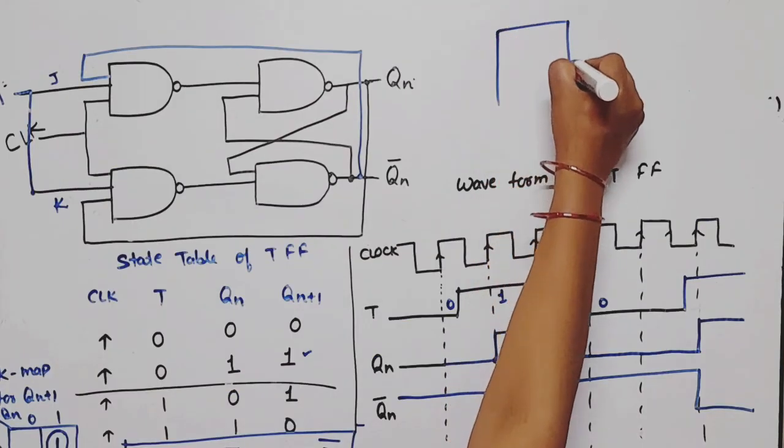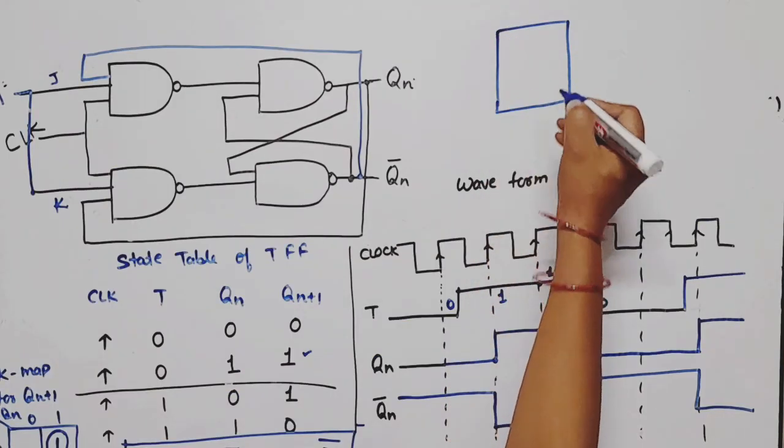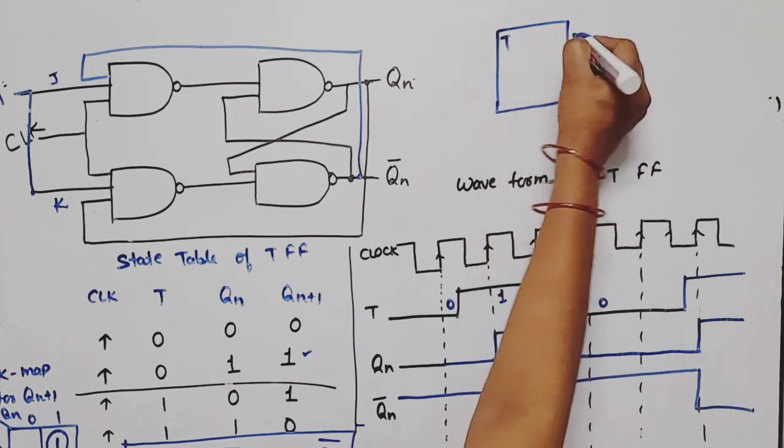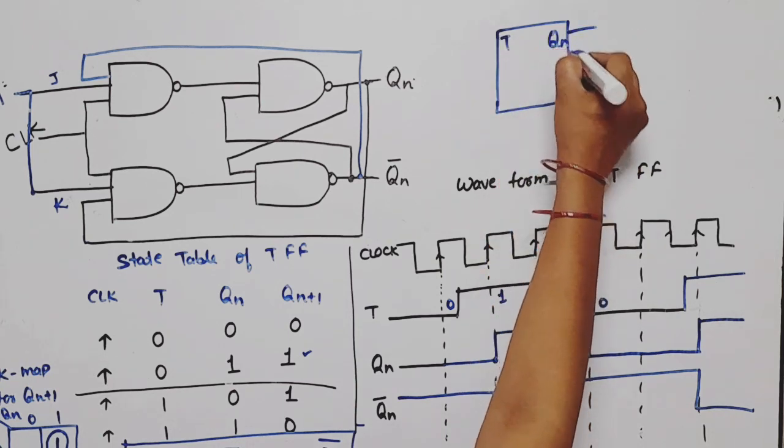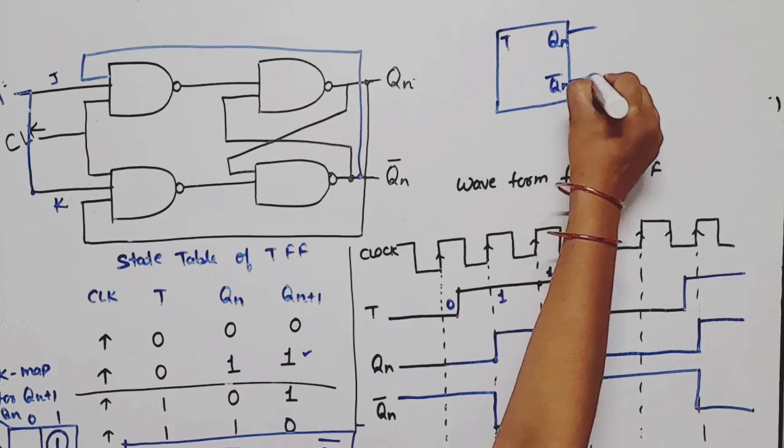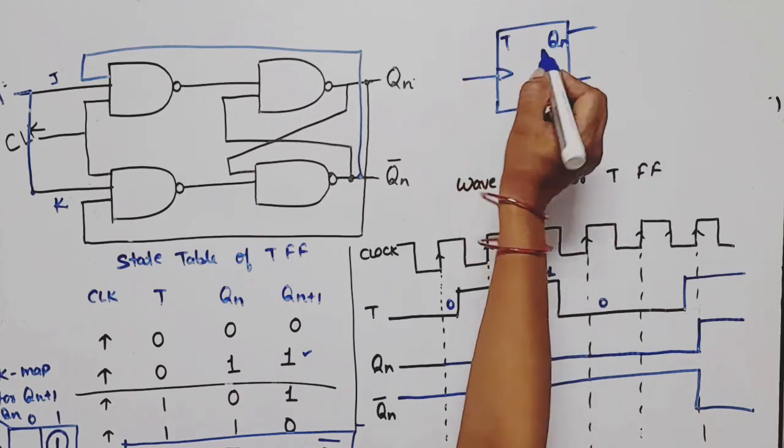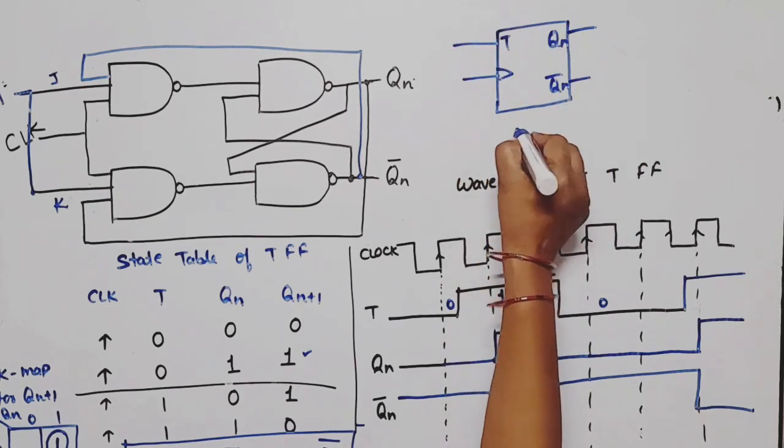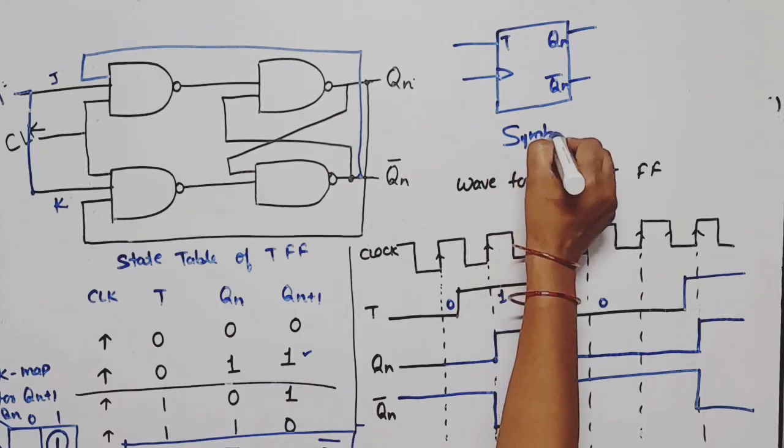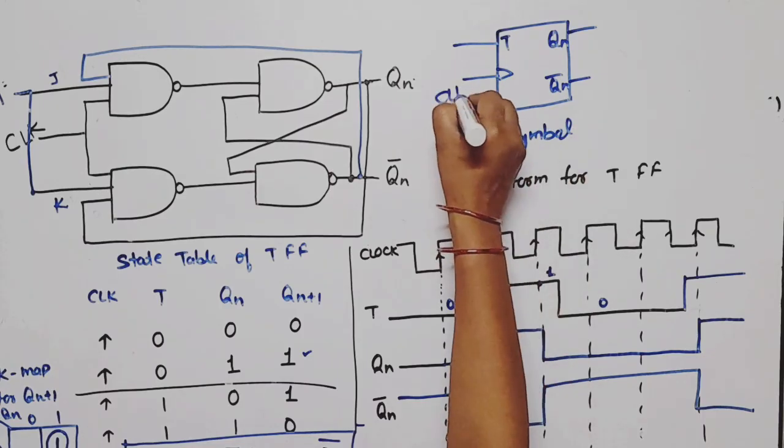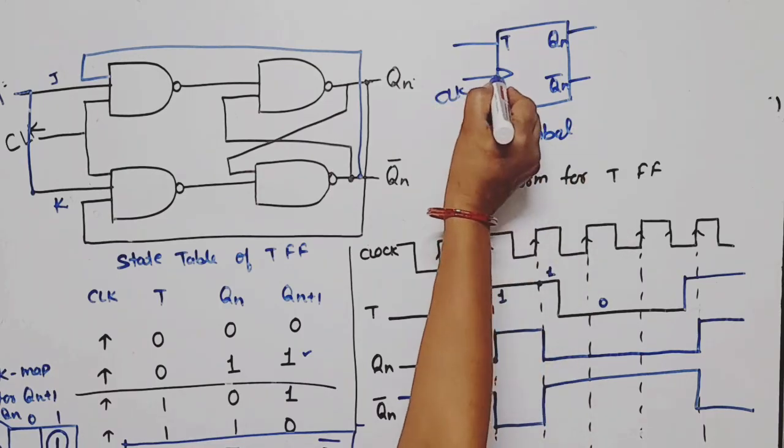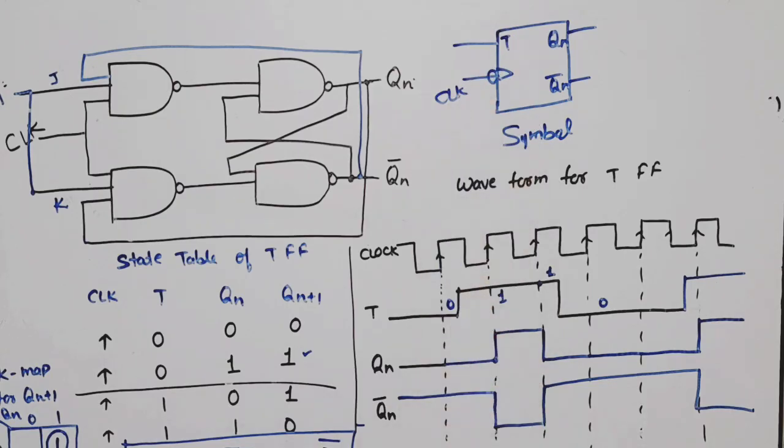How will the symbol be? This is T input, two outputs QN and QN bar. If we talk about positive edge, then it will be like this triangle at the clock. This is the symbol. If you make it negative edge triggered, then there will be a bubble. Please remember, with negative edge, bubble is included at the clock. If it is positive edge, then it will be without bubble at the clock.